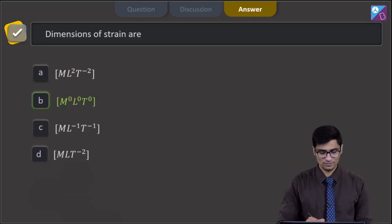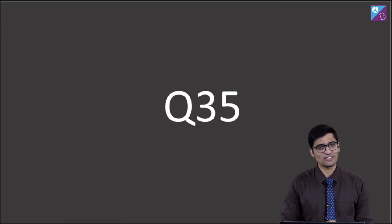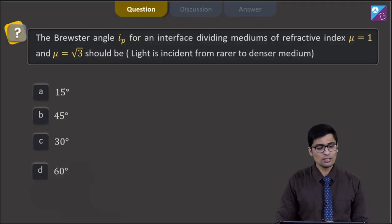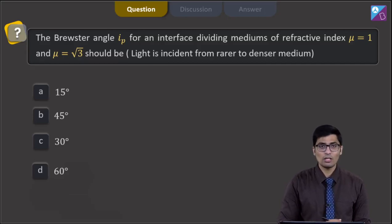Moving on to the next question, this question is question 35. The question says the Brewster angle IP for an interface dividing mediums of refractive index mu equal to 1 and mu equal to root 3 should be. The light is incident from a rarer to denser medium. So, 4 options are 15 degree, 45 degree, 30 degree and 60 degree. Now, let us proceed to the solution.